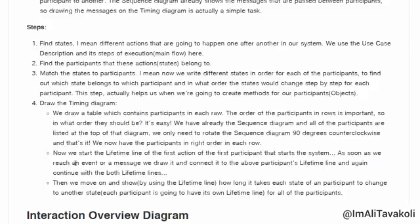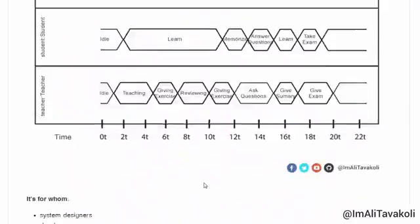We start the live timeline from the first action of the first participant that starts the system. For example, in a teaching process, the teacher is the first participant to start. As soon as we reach an event or message, we draw it and connect it to the relevant participant. In a specific state of the teacher, a method call causes the student participant to change its state. We then show, using the lifeline, how long it takes each state to change to another.